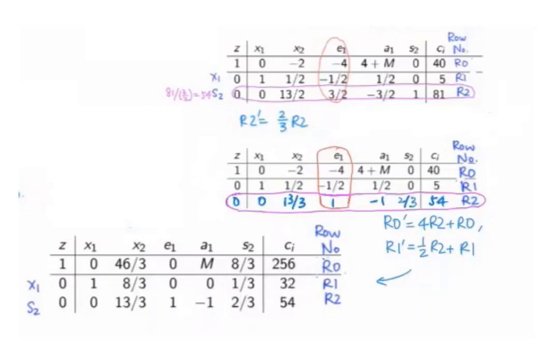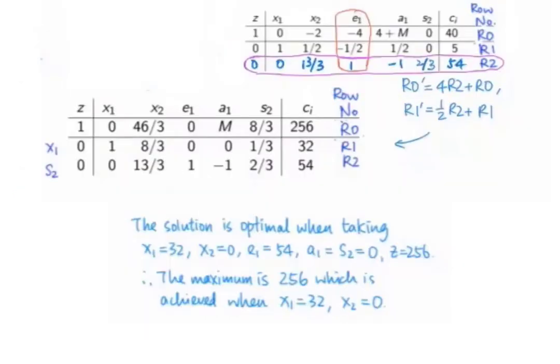This solution is optimal since there are no more negative coefficients for variables in the objective function. In conclusion, the solution is optimal when we are taking these values, and the maximum is 256, which is achieved when x1 equals 32 and x2 equals 0.